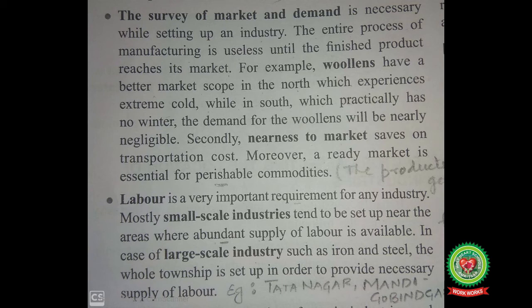The next point is labor. Labor is a very important requirement for any industry. Mostly small-scale industries tend to be set up near areas where an abundant supply of labor is available. In the case of large-scale industry such as iron and steel, a whole township is set up to provide the necessary supply of labor. For example, Tata Nagar was set up near TISCO. In Punjab, Mandi Gobindgarh is a township specifically for providing labor and other persons living nearby.